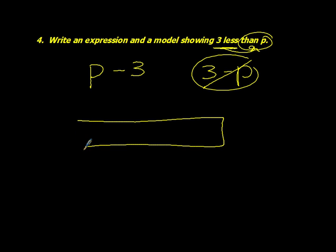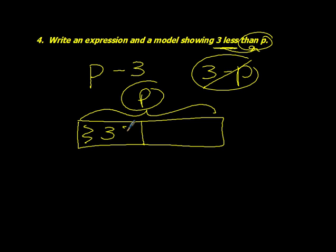So to represent that, I draw one long bar. This represents P. And the stuff that I take away, that's my 3. So I have P, the whole, minus my 3 here to represent it as a model.